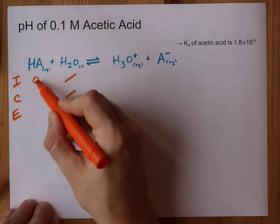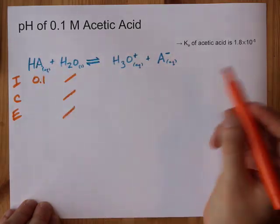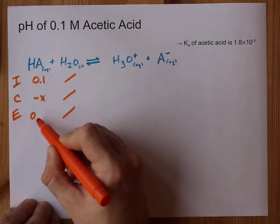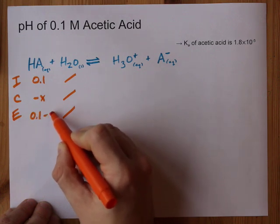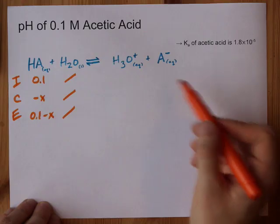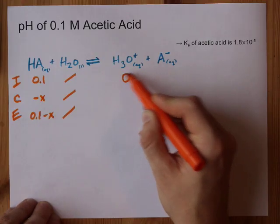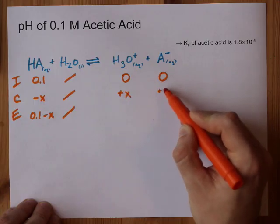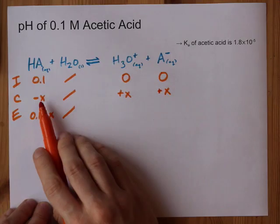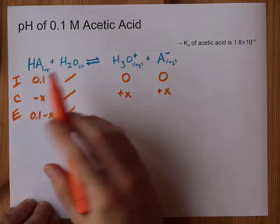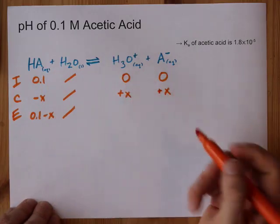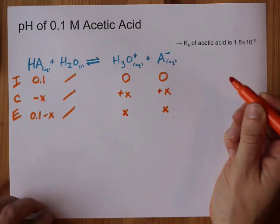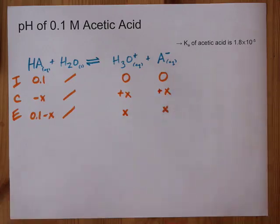We start with 0.1 moles per liter of the acid, and we lose an unknown amount of it, so our equilibrium concentration is 0.1 minus X. We're going to start with almost no H3O+ and no acetate, but we're going to gain an amount of those equal to however much of the acid was lost, because it's the acid that's breaking apart to give us those. So the equilibrium concentrations of H3O+ and A- are both X.